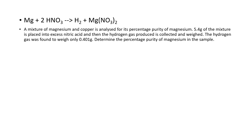Here's another balanced equation. A mixture of magnesium and copper is analyzed for its percentage purity of magnesium — magnesium is our desired reactant. A 5.4-gram mixture is placed into excess nitric acid, and the hydrogen gas produced is collected and weighed. Magnesium reacts with nitric acid, but copper does not at low concentrations. The hydrogen gas is the product; the excess nitric acid is the other substance we react our desired substance with. The hydrogen gas was found to weigh 0.401 grams.